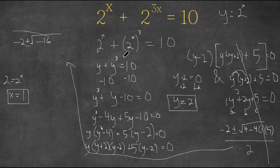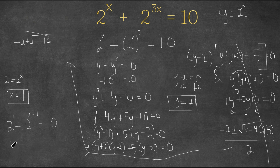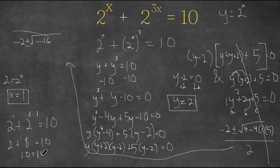Why don't we check our solution in the original equation? If we plug in 1 for x, we get 2 to the power of 1 plus 2 to the power of 3 times 1 equals 10. 2 to the power of 1 is 2, plus 2 to the power of 3, which is 8. This equals 10, and 2 plus 8 does indeed equal 10. So 10 equals 10, and our solution x equals 1 is confirmed correct.